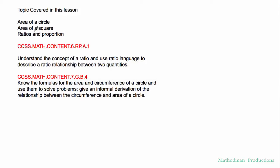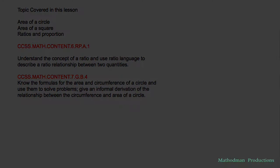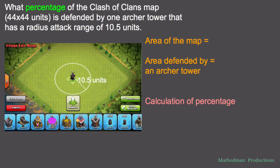Topics that will be covered in this lesson: area of a circle, area of a square, ratios and proportions with percent — all in one problem. The Common Core standards are listed on screen. The question is: what percentage of the Clash of Clans map is defended by one archer tower that has a radius attack range of 10.5 units? In other words, what percentage of the map is defended by this little circle right here?